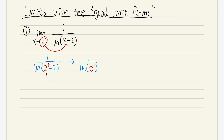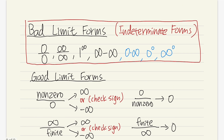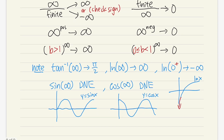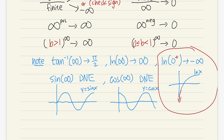On the bottom we have ln(0 plus). Can we draw a conclusion? Yes — this gives us negative infinity. Remember the graph for natural log? As x is approaching 0 plus, the graph goes straight down. We have a vertical asymptote there. So that's why it's negative infinity.